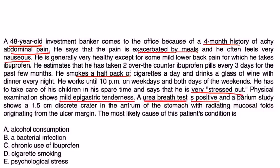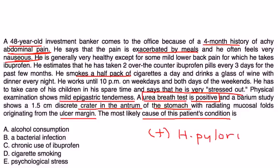A barium study shows a 1.5 centimeter discrete crater in the antrum of the stomach with radiating mucosal folds originating from the ulcer margin. The most likely cause of this patient's condition is: he has the symptoms, abdominal pain and nausea. But the most important part is the urea breath test being positive, which is most likely due to him being positive for H. pylori. H. pylori is a gram-negative bacteria. So the answer to this question would be B.